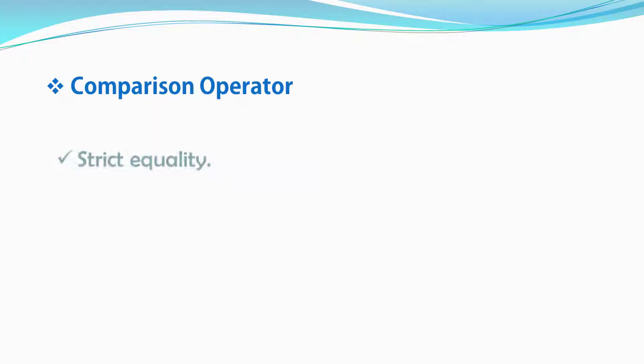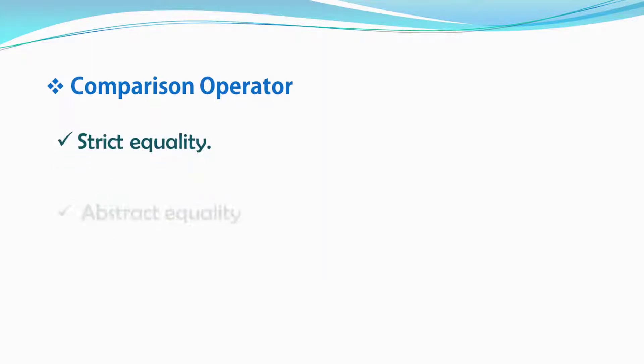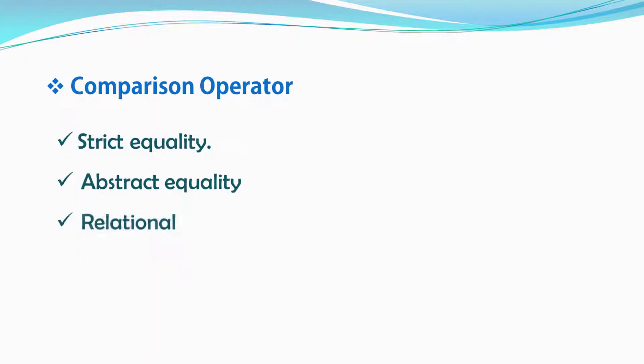As the name implies, comparison operators compare two different values. Broadly speaking, there are three types of comparison operators: strict equality, abstract equality, and relational equality. We will take a look at all three types in the next tutorial. But now, just take a look at how a comparison operator looks like.